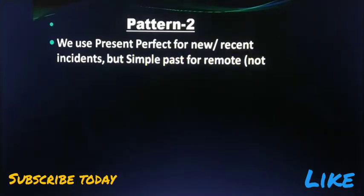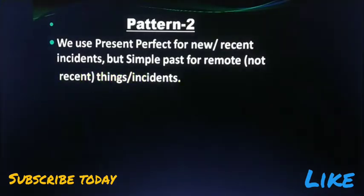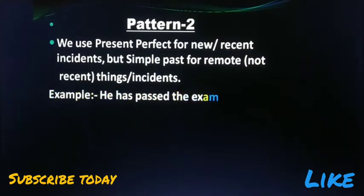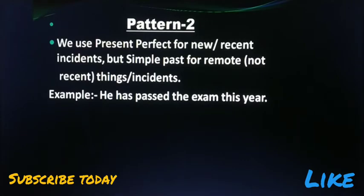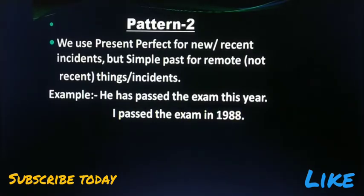Pattern two: we use present perfect tense for new or recent incidents, but simple past tense for remote, not recent things or incidents. Example: 'He has passed the exam this year' — the result came out recently, about one week ago, so it is a recent incident. But for a remote past event, we use simple past: 'I passed the exam in 1988' — that was long ago, so we use simple past tense.